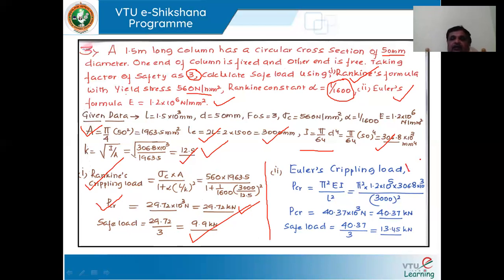According to Euler's, we have the equation PCR equal to pi squared EI by Le squared. We substitute the value of E, then moment of inertia, then effective length. We will get the crippling load as 40.37. The safe load is calculated by dividing by the factor of safety, giving 13.45. So according to Rankine's formula, the safe load is 9.9 kilonewtons, and according to Euler's, the safe load is 13.45 kilonewtons.